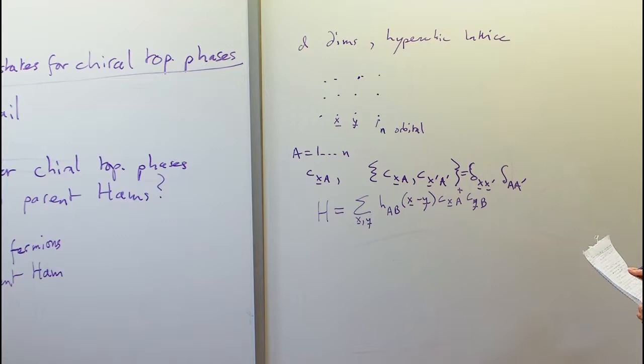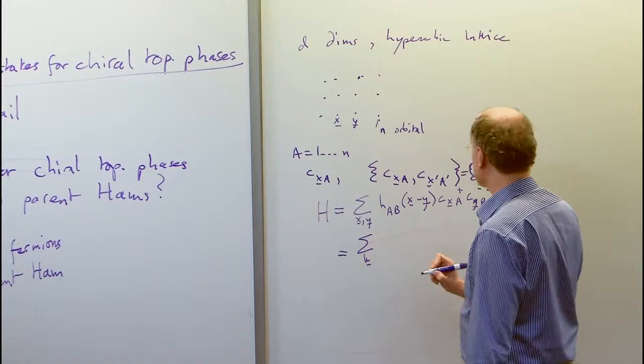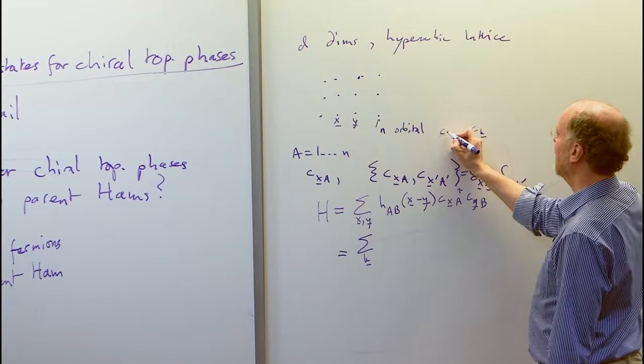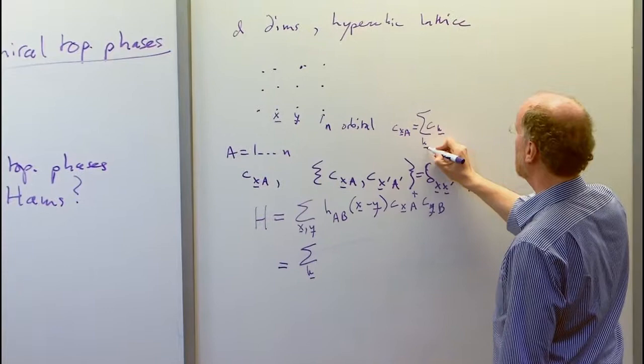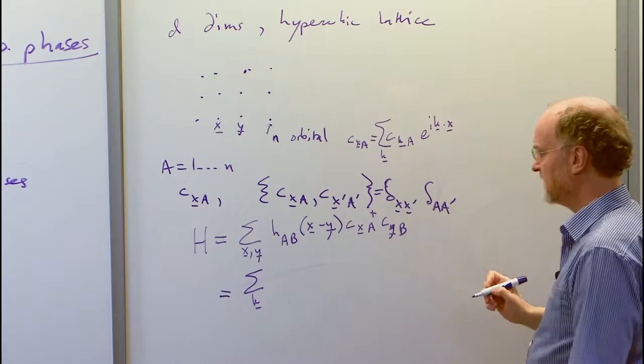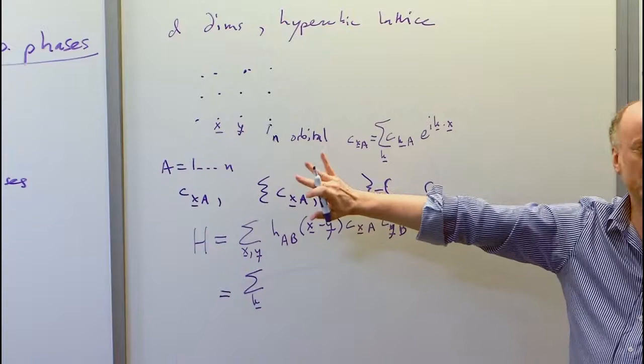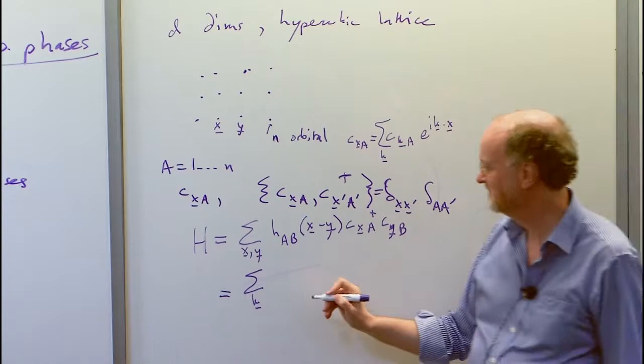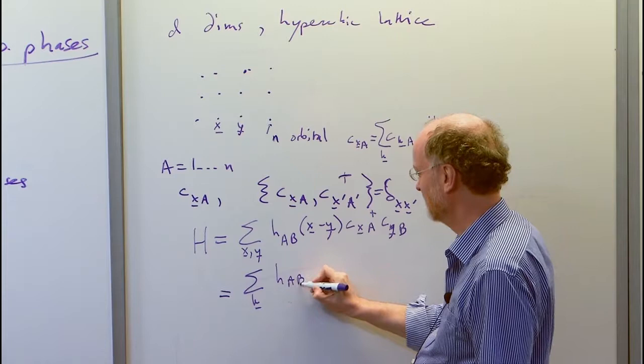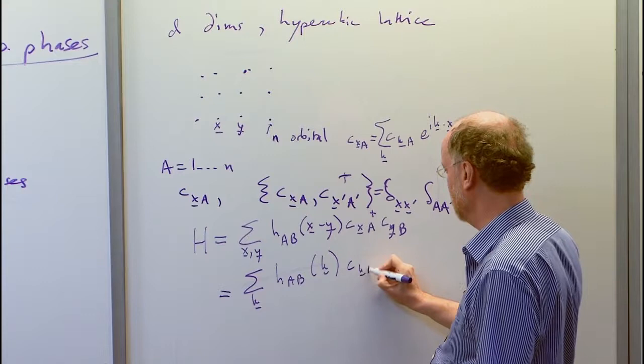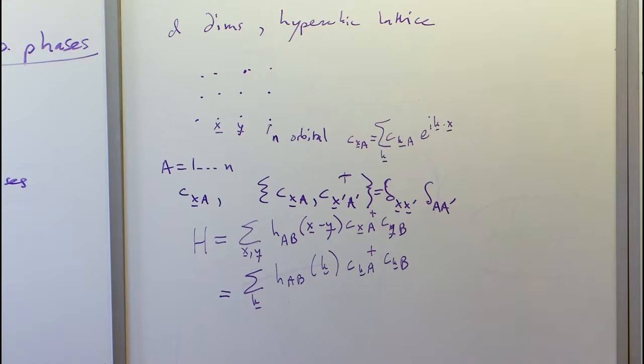To diagonalize this, we use a Fourier transform: c_{x,a} equals sum over k of c_{k,a} times e^{ik·x}. This reduces the problem to a finite-dimensional matrix problem for each k. The Hamiltonian becomes a sum over k of c_{k,a}^† H_{ab}(k) c_{k,b}, where H_{ab} depends on k, giving us a finite matrix to diagonalize at each momentum.